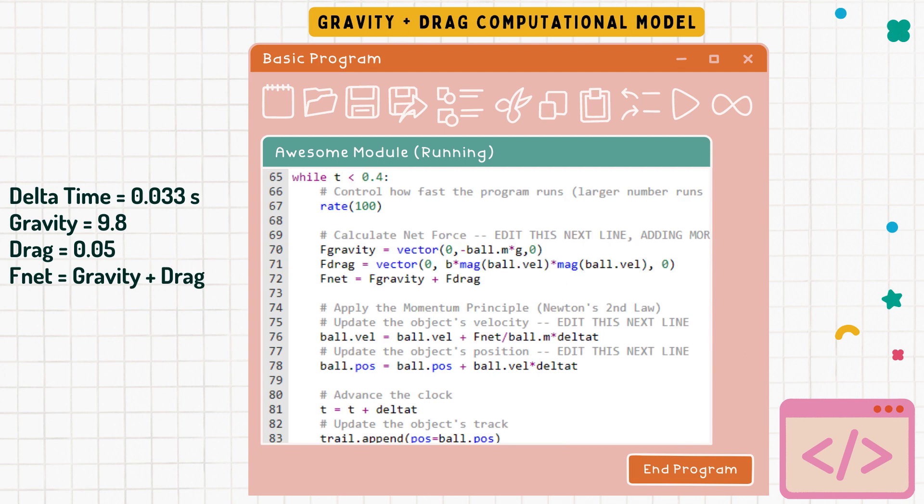And now moving on to our gravity and drag computational model we now consider drag into our forces. In order to do this we had to individually compute our gravity and drag forces and then add them together to get our net force. And then for our velocity it was the same, we just divided our net force by our mass times delta t.